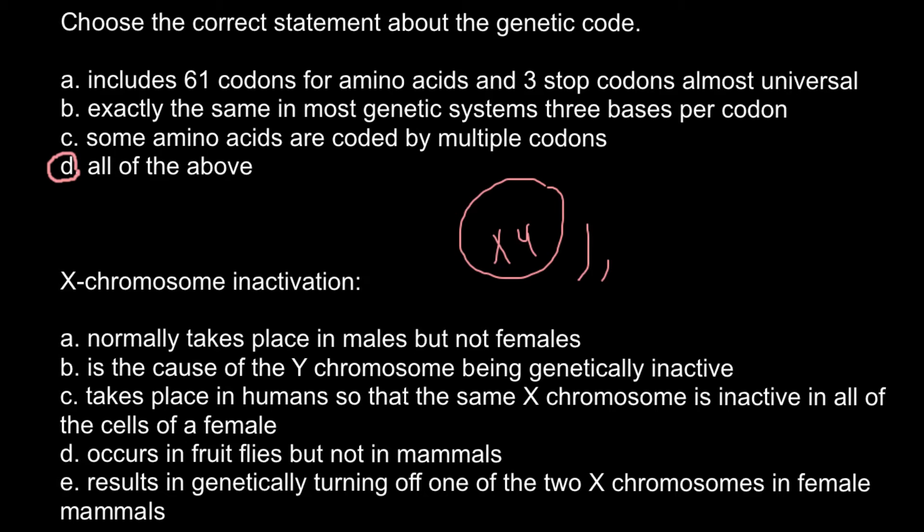Such an organism wouldn't be able to live, so in males the X chromosome is always turned on. We can cross out answer A. Answer B states it is the cause of the Y chromosome being genetically inactive — but the Y chromosome is also active because there are some important genes on it that make a male male. If the Y chromosome were absent, the organism phenotypically would be female, though this would be a syndrome since one X chromosome is not enough for normal function.